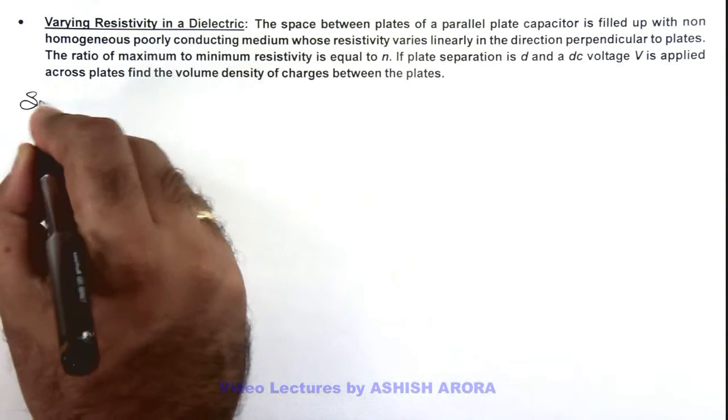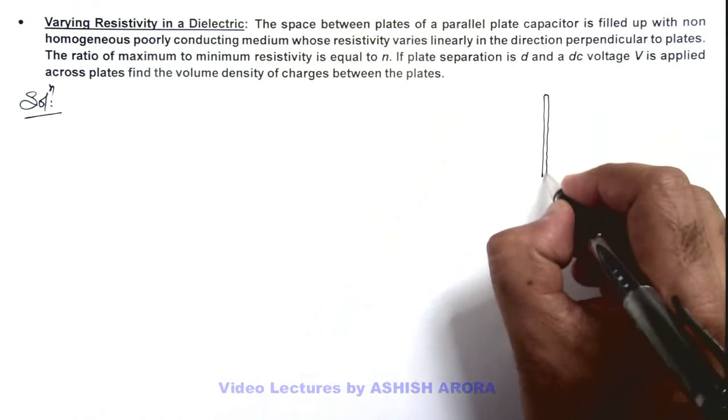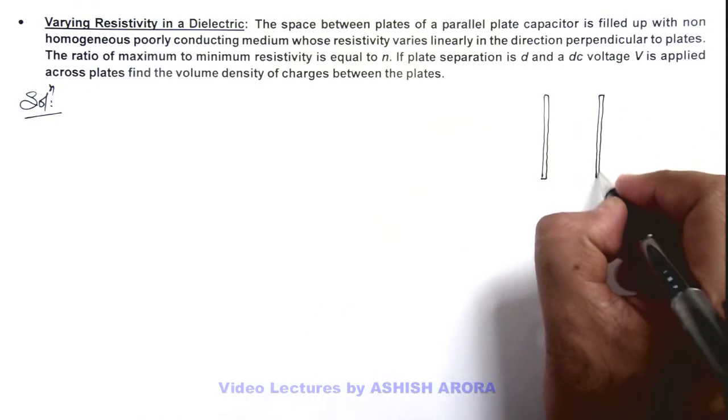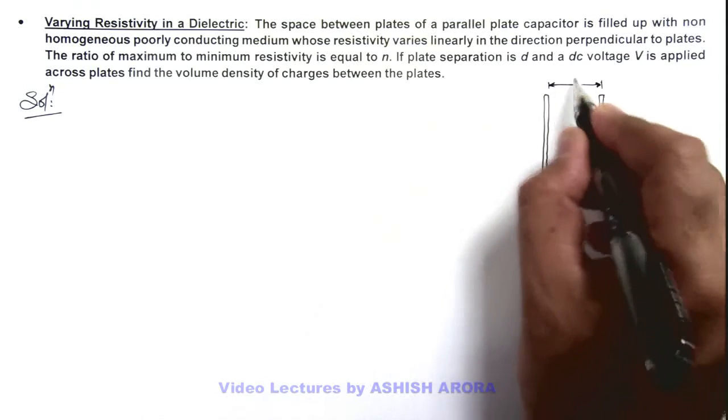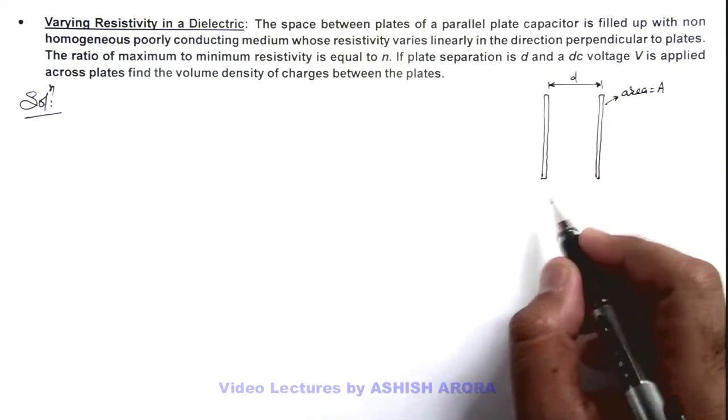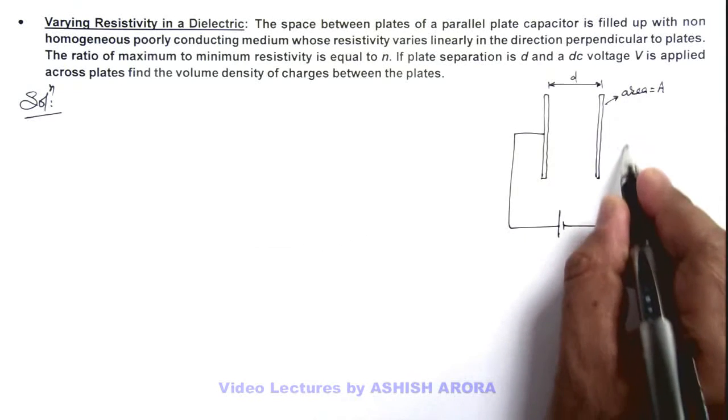Here if we draw the picture, we can draw the capacitor. These are the plates of capacitor which are having a plate separation d, and its plate area we can consider as A. And a battery of voltage V is applied across these plates.